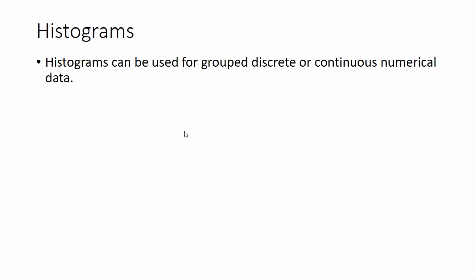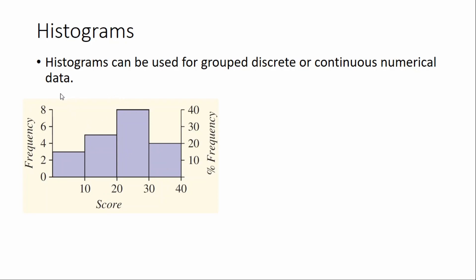The next type of data display we're going to go through is histograms. These can be used for either grouped discrete numerical data or continuous numerical data. If it's discrete numerical data, the values have to be grouped. Looking at this example, this is grouped discrete numerical data, so scores between 0 to 10 percent have been grouped — everyone that got 0 to 10 percent is in that group.